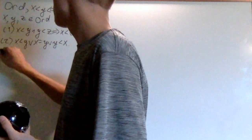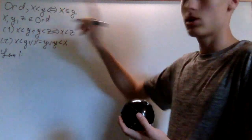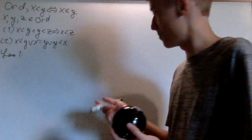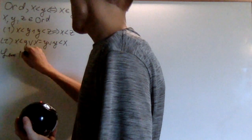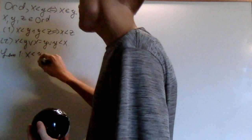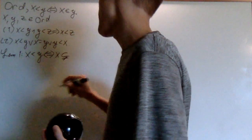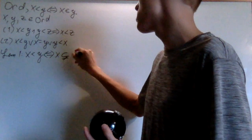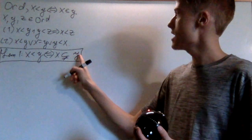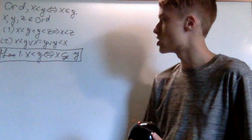Our first lemma is going to be proving the equivalence of this order to a different form. What we prove is that x is less than y if and only if x is a proper subset of y — so it's not equal to y. And this is for x and y elements of Ord. This is not true if only y is in Ord.